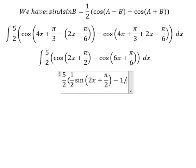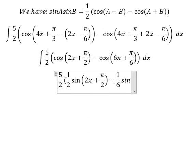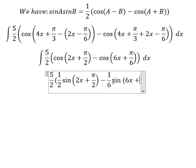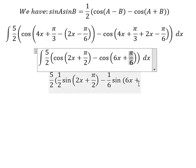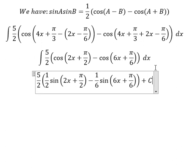Minus one over six sine of 6x plus π over 6, minus one over six, and we put C here. This is the end, thank you for watching.